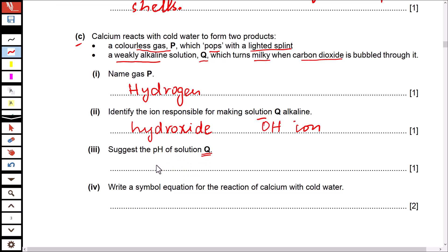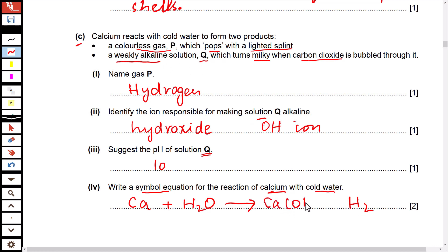Write a simple equation for the reaction of calcium with water. Calcium reacts with water to produce calcium hydroxide and hydrogen gas. To balance: there are 4 hydrogen atoms on the right side, so multiply H₂O by 2. Hydrogen and oxygen are then balanced, and calcium was already balanced.